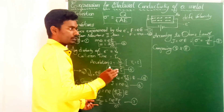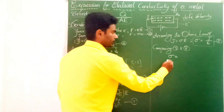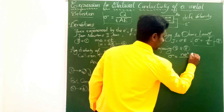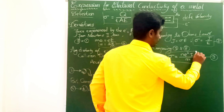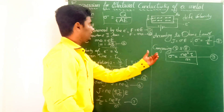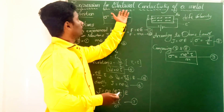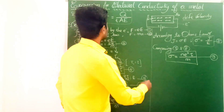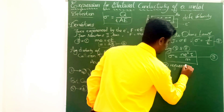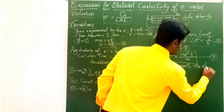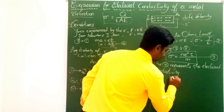Comparing the two equations, sigma equals ne²τ/m. This is equation number 9, and it represents the electrical conductivity of a metal.